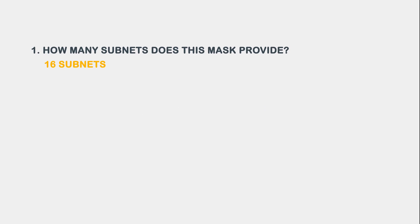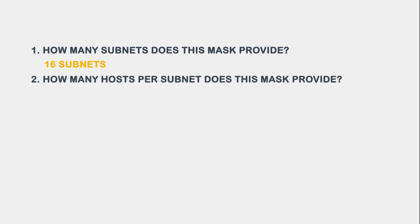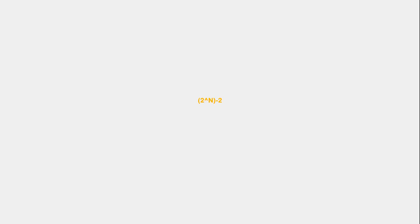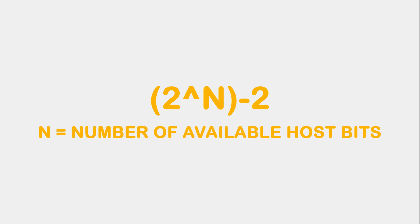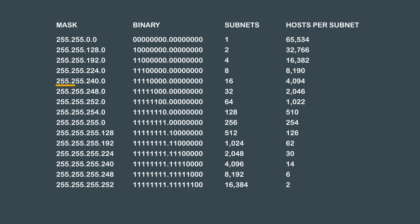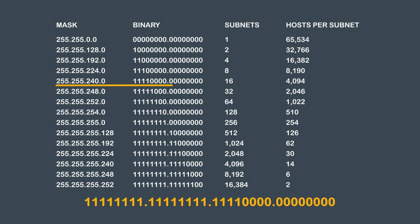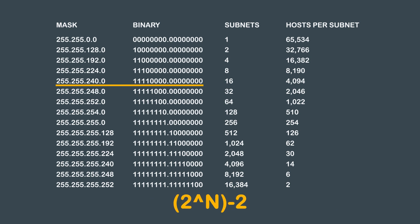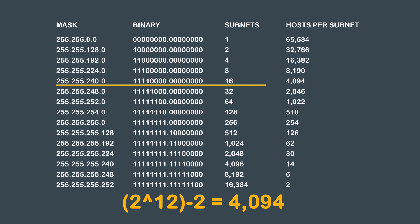Question 2: How many hosts per subnet does this mask provide? To calculate the total number of hosts, we need to count how many host bits are available in our subnet mask, then apply the 2 to the power of n minus 2 formula, where n equals the number of available host bits. Our subnet mask is 255.255.240.0, which translated into binary equals all ones, all ones, four ones and four zeros, followed by all zeros. As you can see, we have 12 available host bits. Using our 2 to the power of n minus 2 formula, we get 2 to the power of 12 minus 2, so our answer for question 2 is 4,094 hosts per subnet.